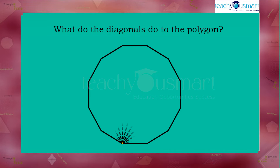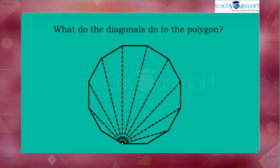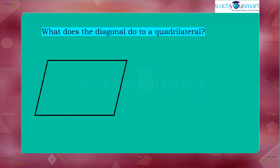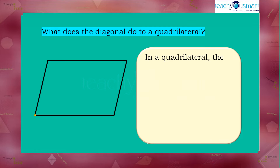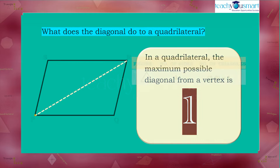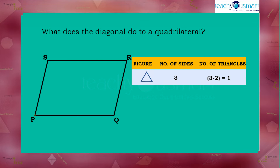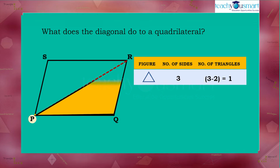Now let's see what the diagonals do to a polygon. In a quadrilateral, the maximum possible diagonals from a vertex is one. Here, in quadrilateral PQRS, the number of diagonals from vertex P is one. Therefore, diagonal PR divides the quadrilateral PQRS into two triangles: triangle PQR and triangle PSR.